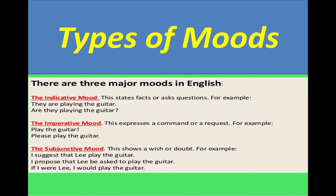The second is imperative mood. In imperative mood we have request, command, threat, instruction and many different things. Example: 'Play the guitar' — this is ordering someone. 'Please play the guitar' — this is a request. Both are imperative. Advice, suggestion, instruction, threat, or warning all fall under imperative mood.